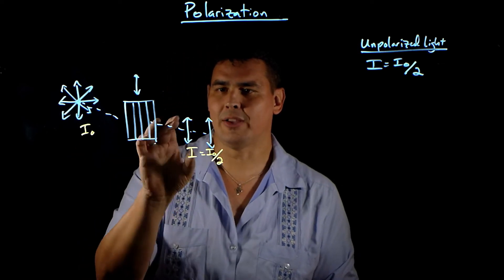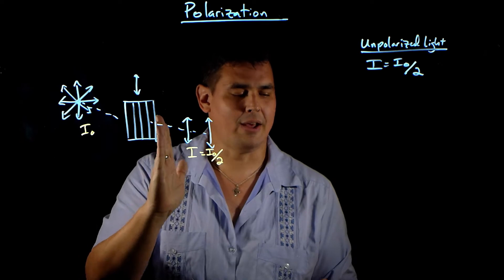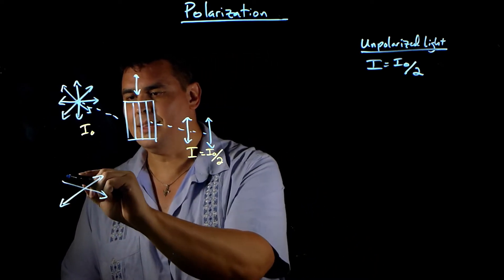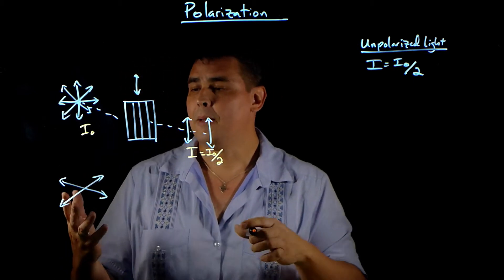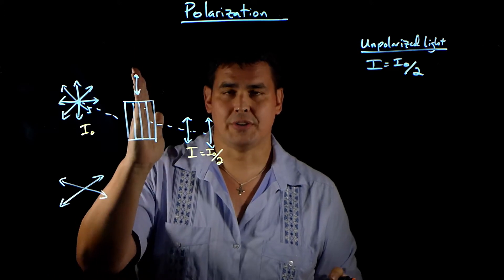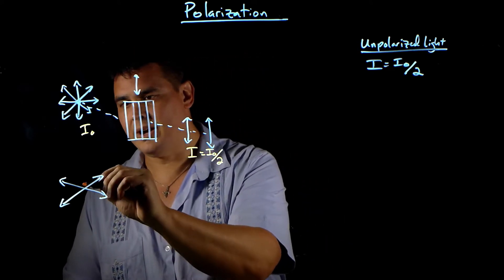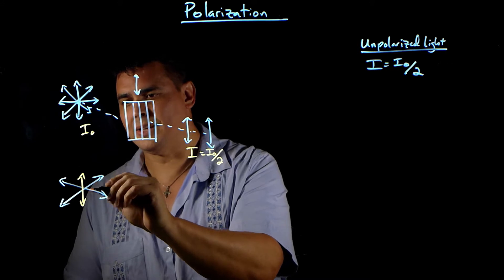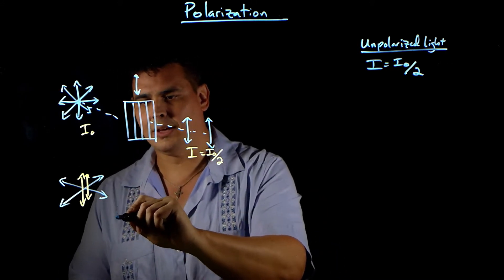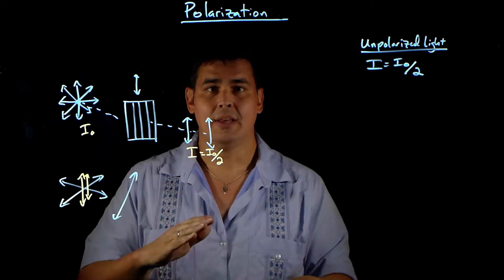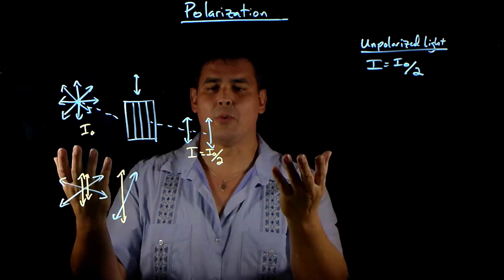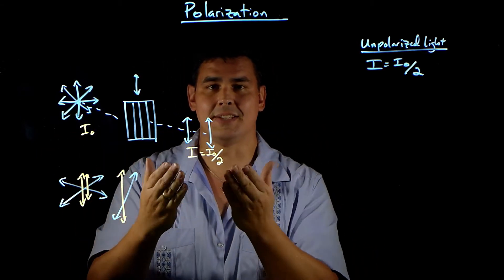The reason it's divided by two — you might say it's only letting through the stuff pointing up and down, but remember, if I have waves oriented at other angles, each of those has a component that's going to be in the direction of the polarization axis. So every direction has some component along the polarization axis, and it all kind of works out to be about half of the intensity gets through.